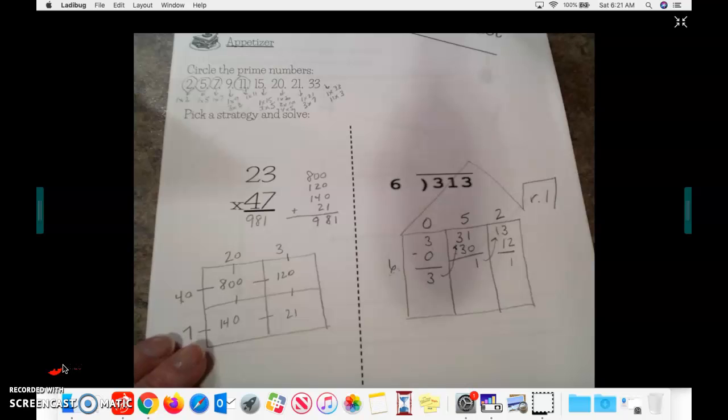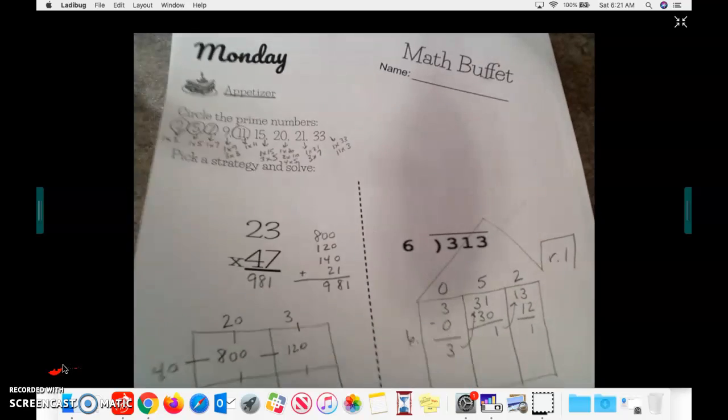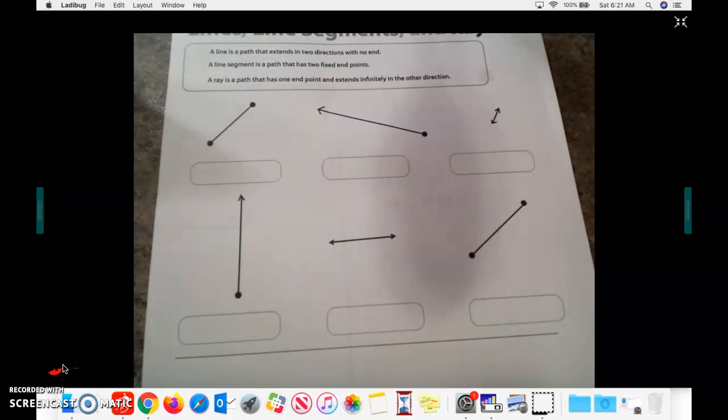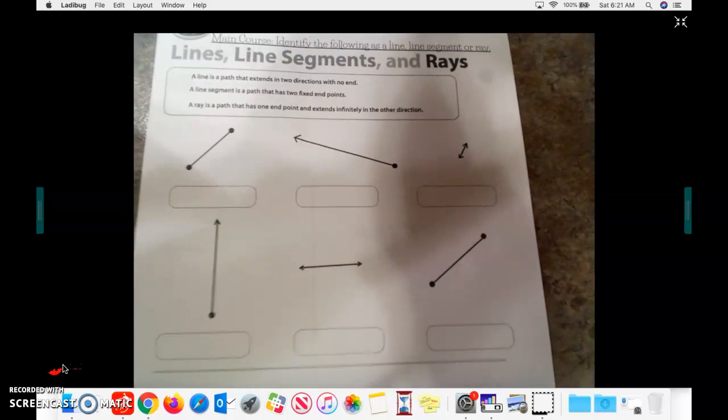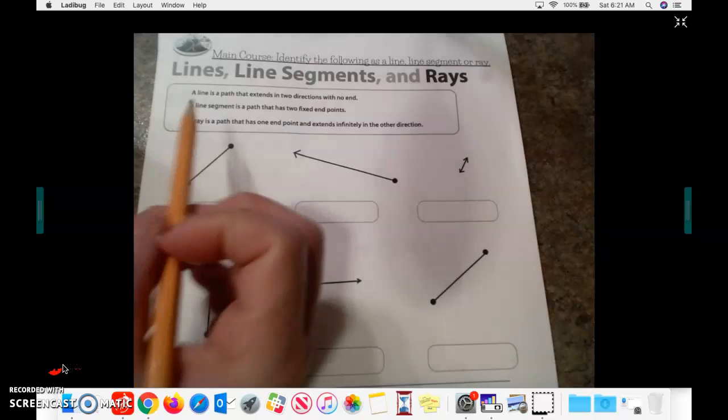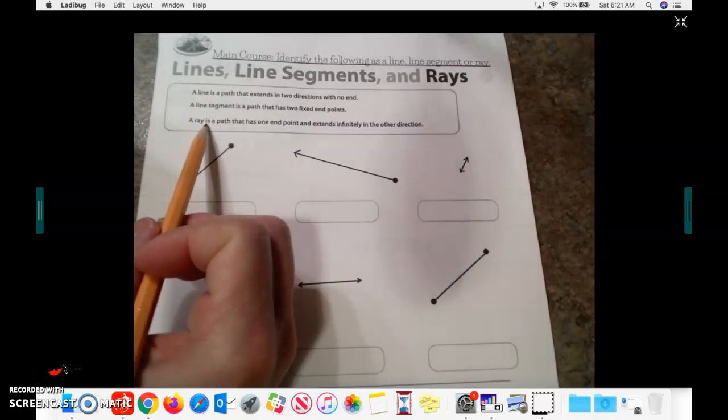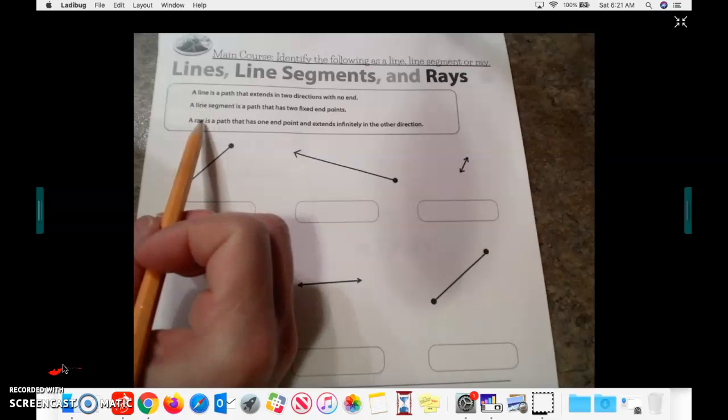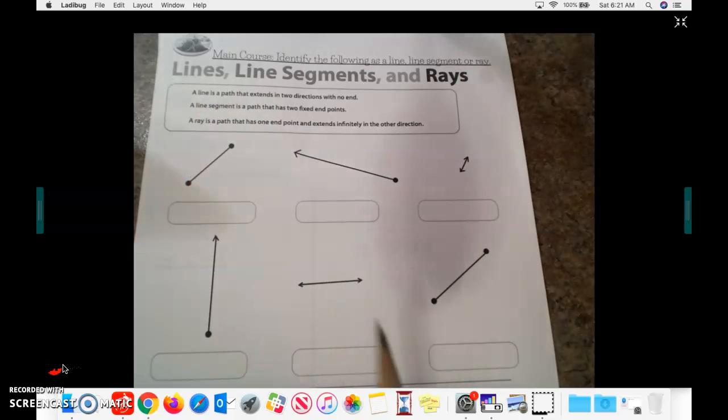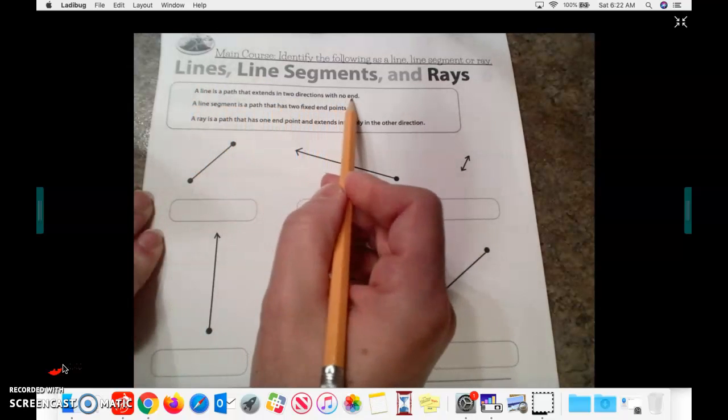Okay, after you have finished checking your answers on the appetizer for Monday, you are going to flip to the back of your page, and you are now moving on to the main course. The main course today is going to cover lines, line segments, and rays. You will see here in this box that each of these items has been defined for you. So it tells you what that looks like, and you may have some experience with this.